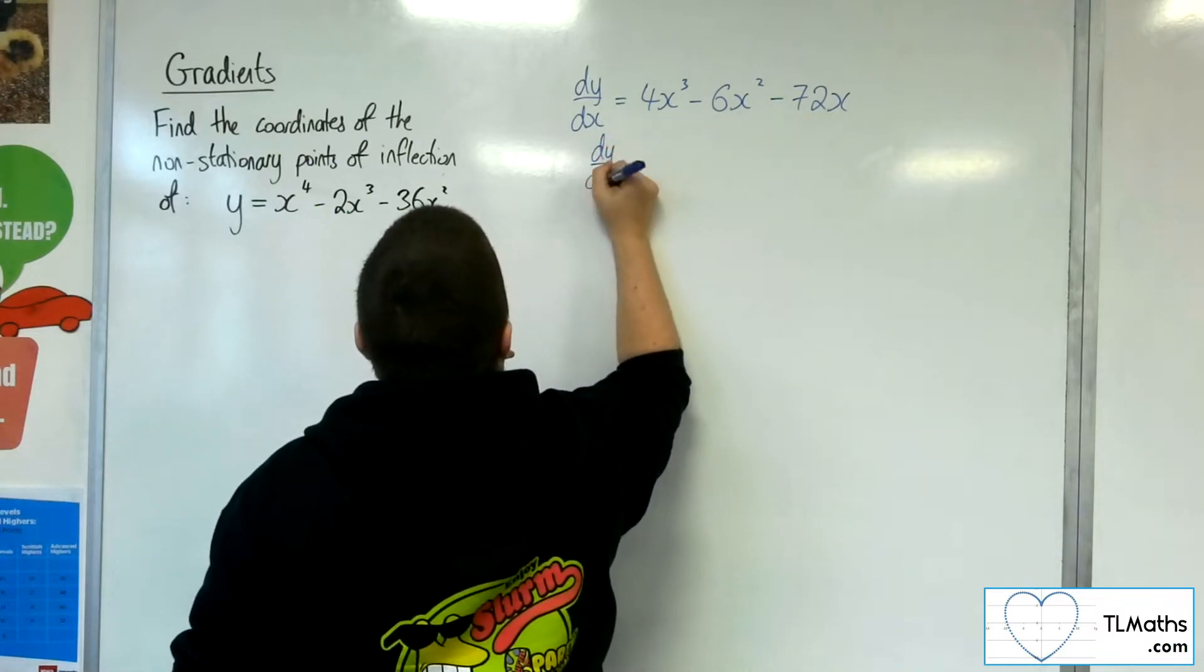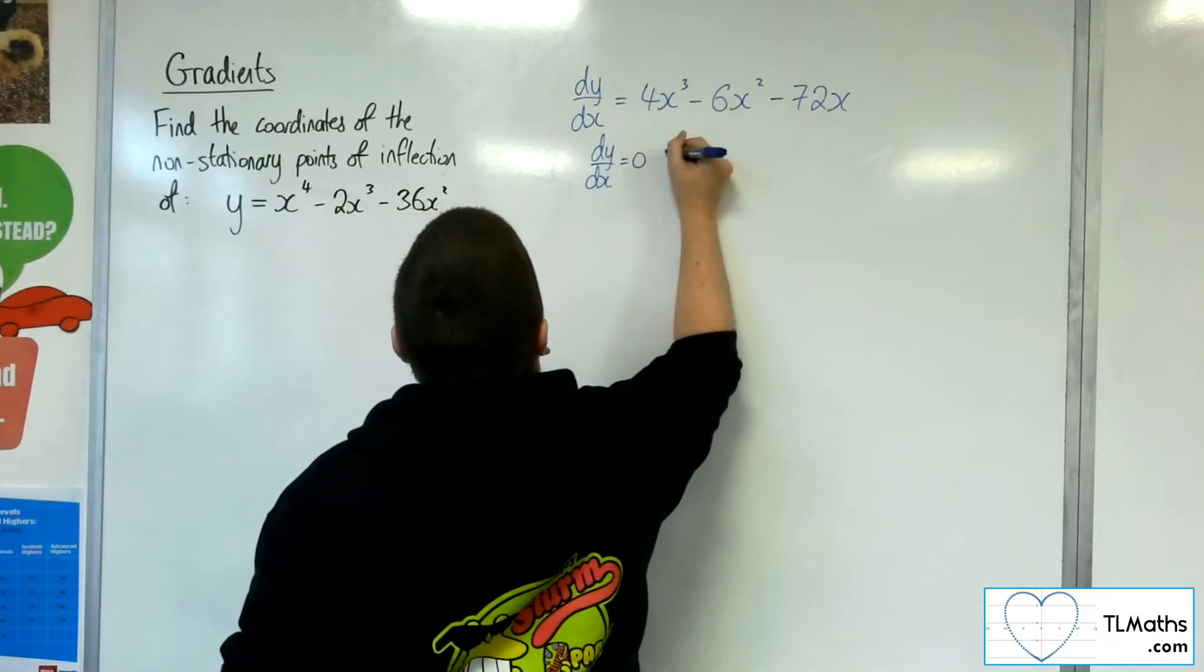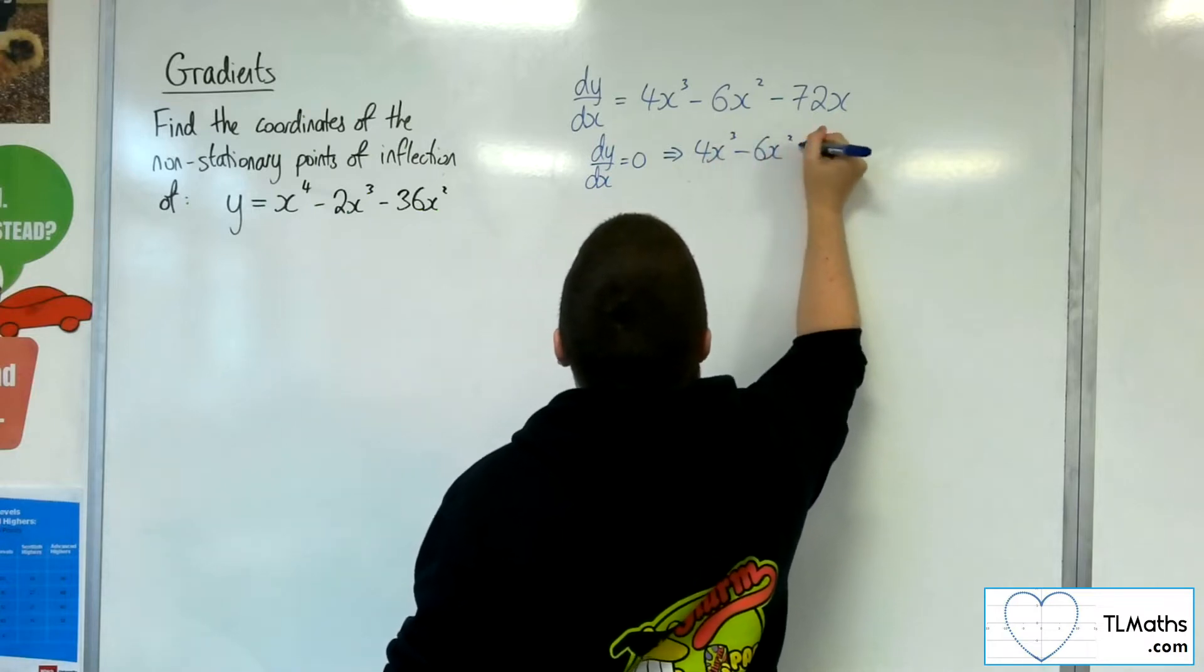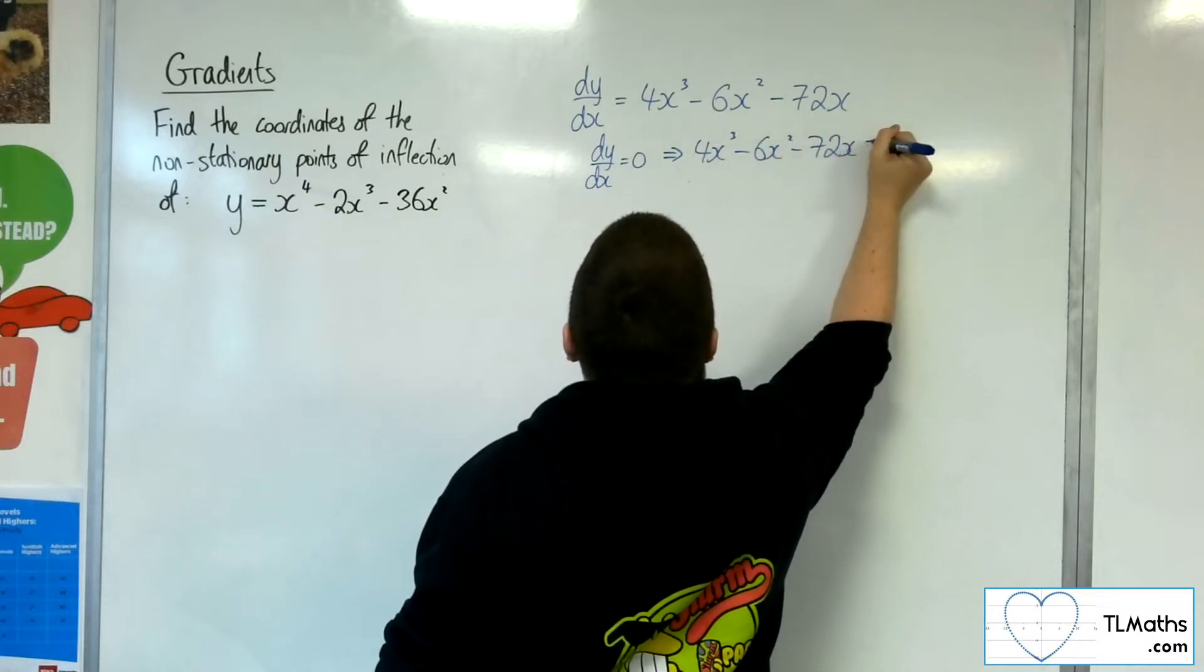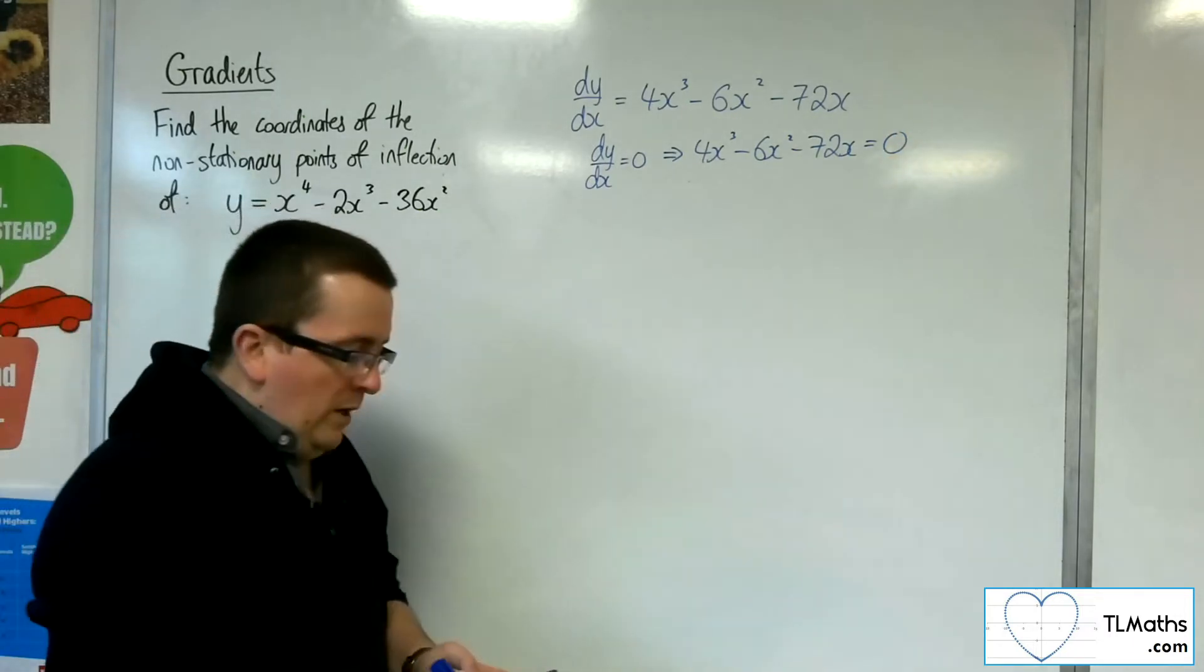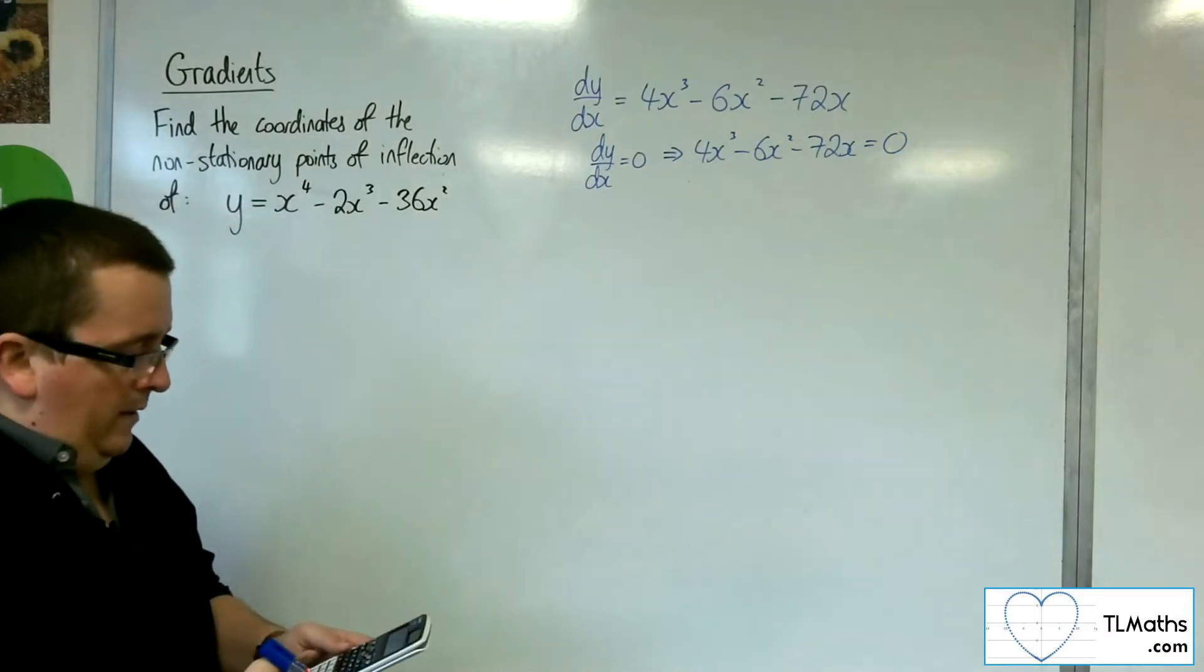So we're going to want to find the stationary points first. So we want to solve this cubic. I'm going to use my cubic solver on my calculator to do that.